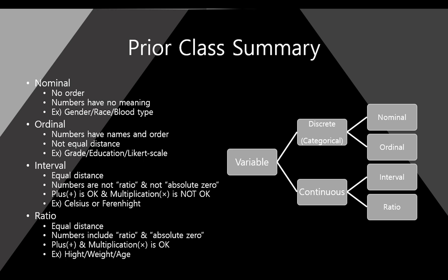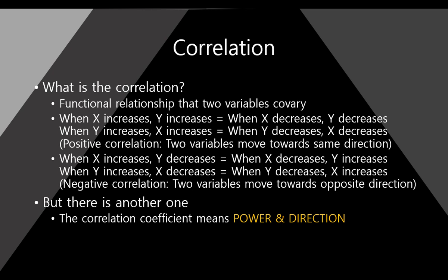In the prior class, we learned about types of variables: nominal, ordinal, interval, ratio. And this time, we study about the correlation. What is the correlation?